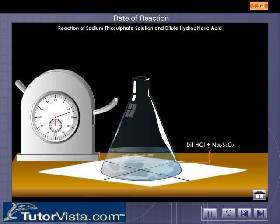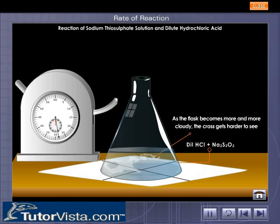Immediately, a stop clock is started. As the reaction proceeds, the flask gets more and more cloudy and the cross gets harder to see. This is because the concentration of sulfur increases.